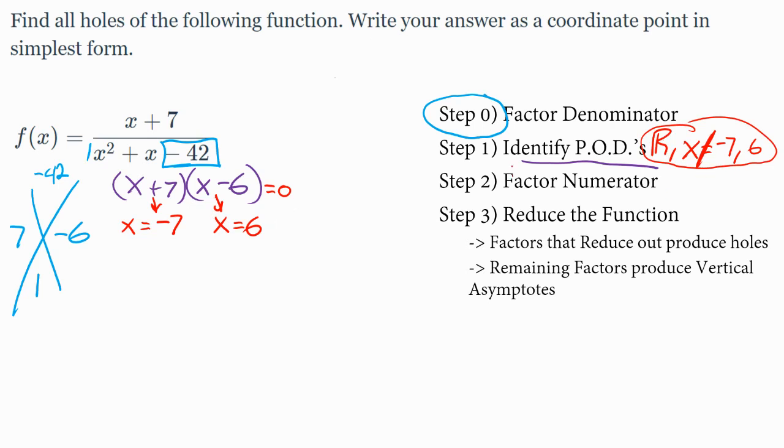Now, our job is to factor the numerator if possible. That one's already done because x plus 7 is factored. I'm going to rewrite the problem to say x plus 7 over x plus 7 times x minus 6 so that we can see that these x plus 7s very nicely vertically align.